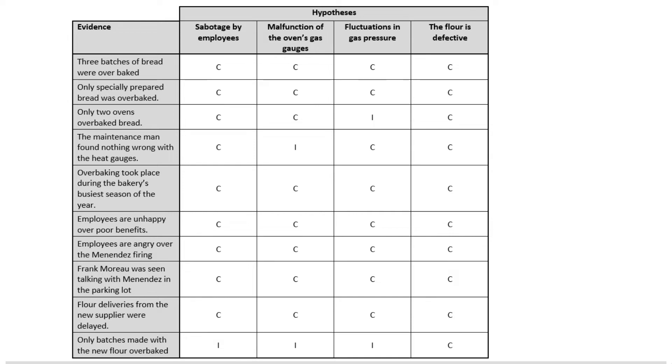Would ovens gauges only have malfunctioned with flour that was from this new batch? Well probably not, I can't imagine what the gauge knows about the flour. Gas pressure likewise wouldn't account for only batches with this new flour being over baked, but the flour being defective certainly would account for that. So we've now got this other piece of information in the mix that we've been able to add in as we tried to refine and explore these hypotheses a little bit more.